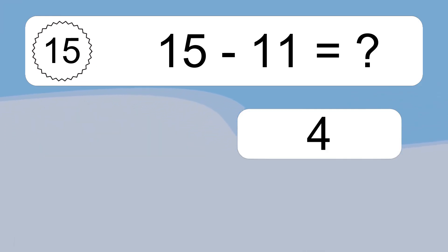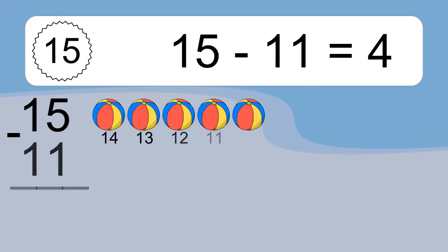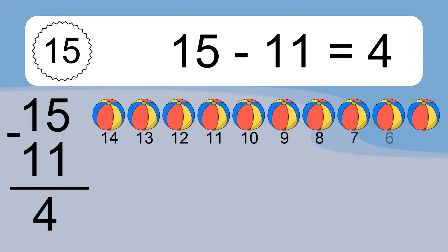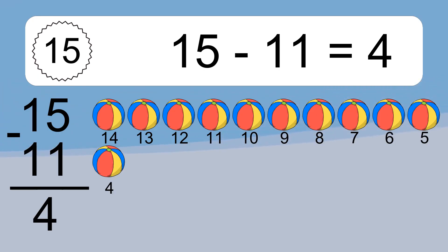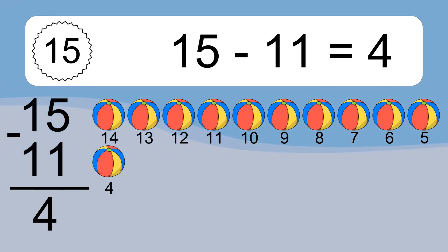15 minus 11 equals what? 15 minus 11 equals 4. Let's count it: 14, 13, 12, 11, 10, 9, 8, 7, 6, 5, 4.